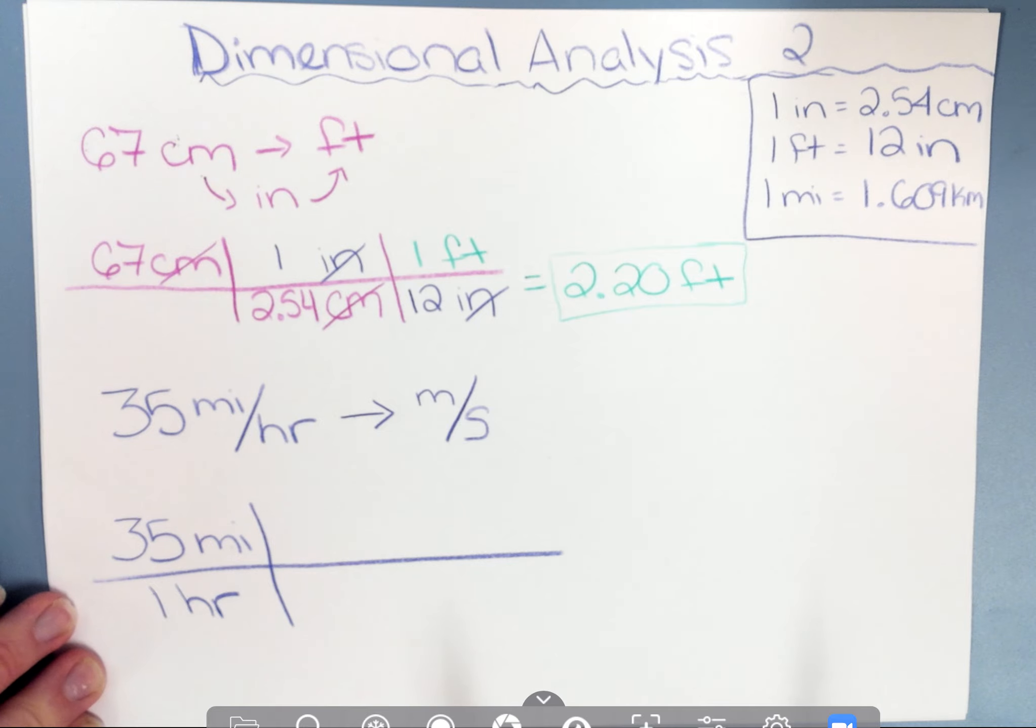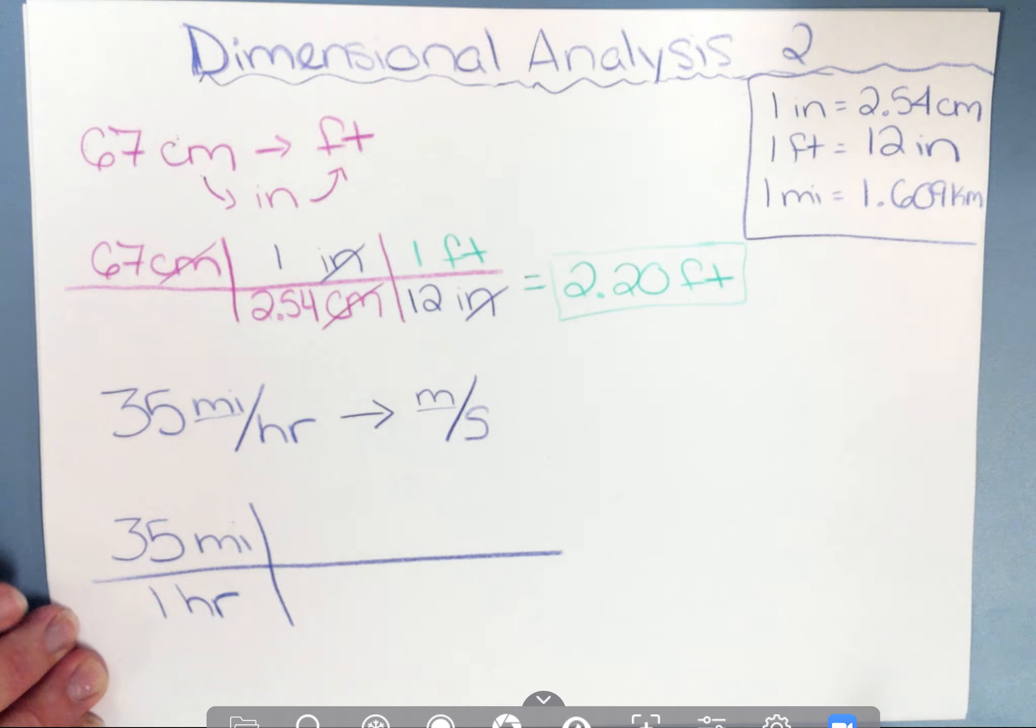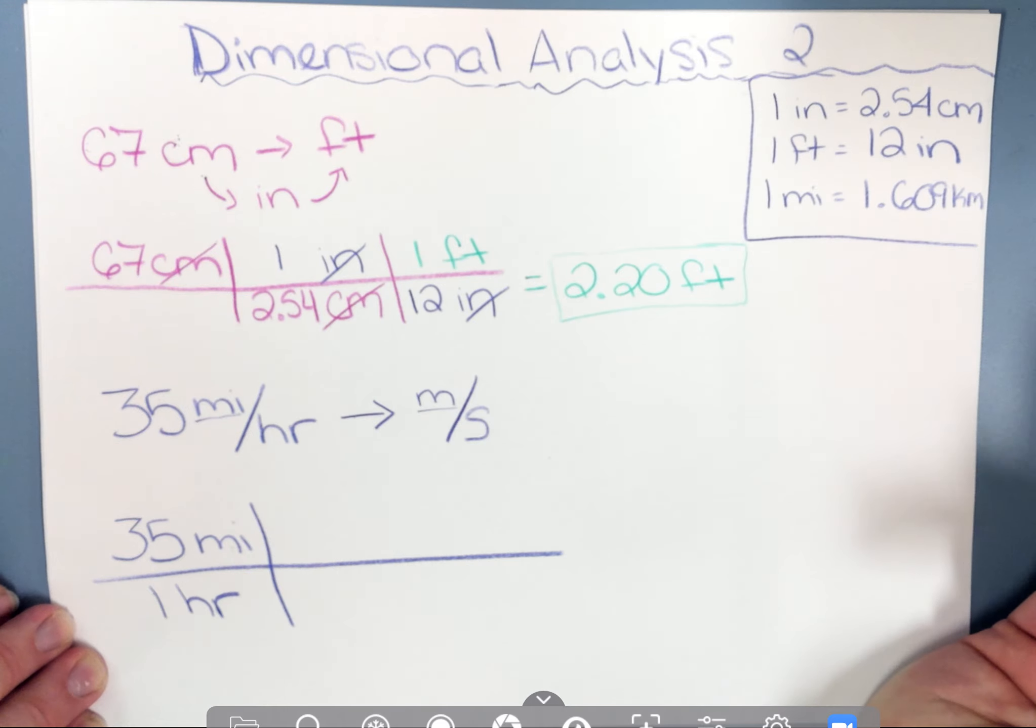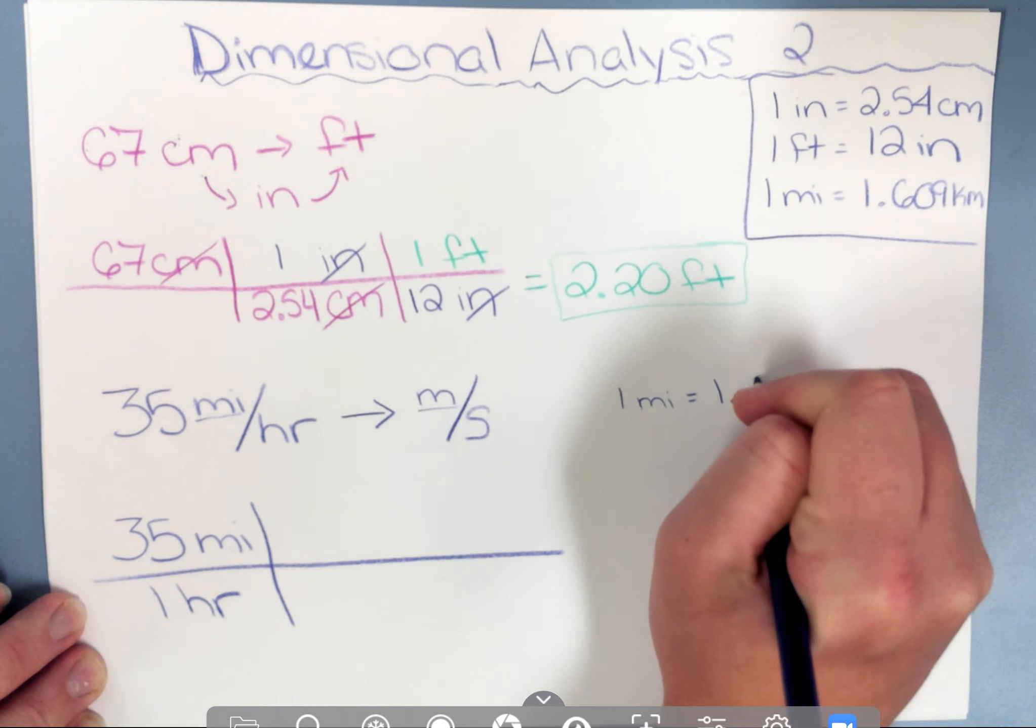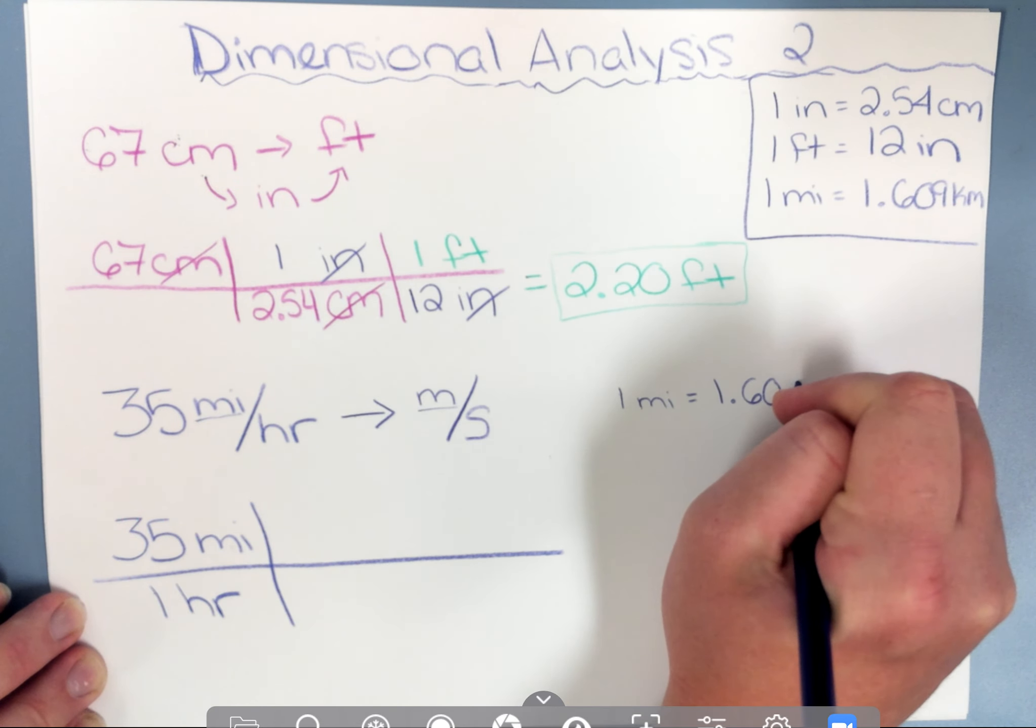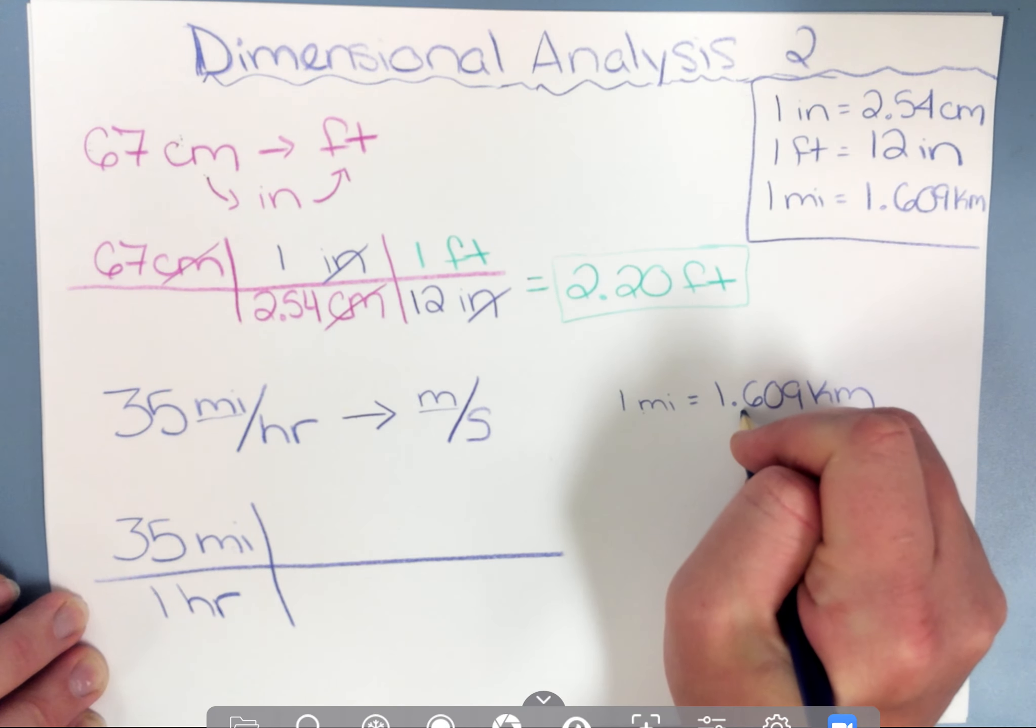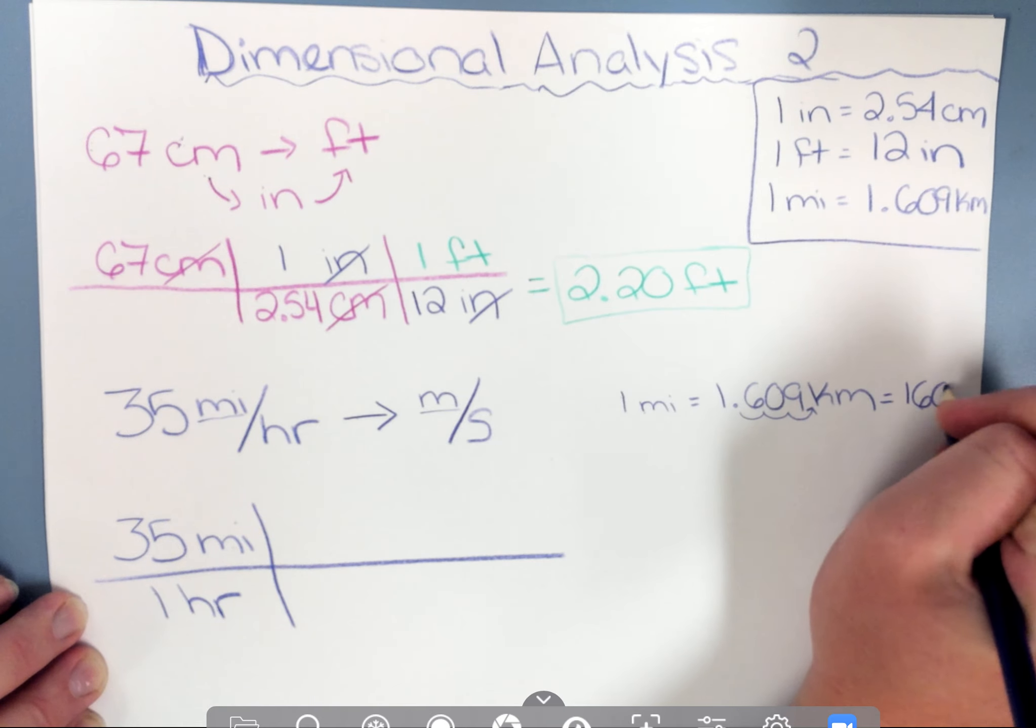My first step is going to be going from miles to meters. Now I know that one mile is 1.609 kilometers. I'm actually going to write that right here. So one mile equals 1.609 kilometers. Now I could either go from miles to kilometers then kilometers to meters, or I'm going to make my life a little easier and I'm just going to take this and King Henry died by, move this decimal over three places to get 1,609 meters.